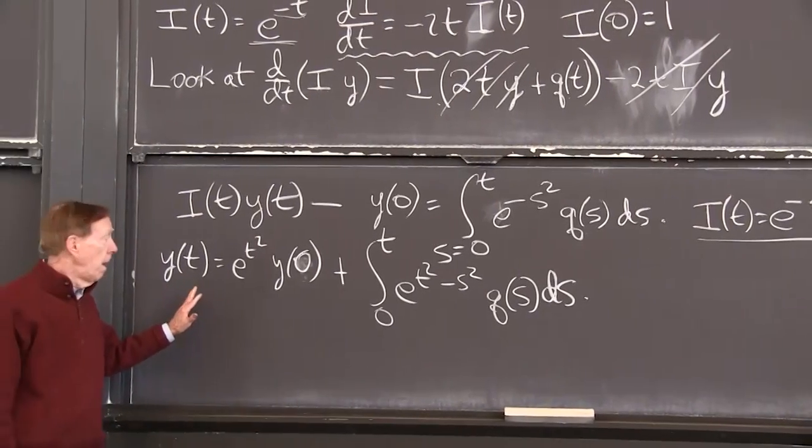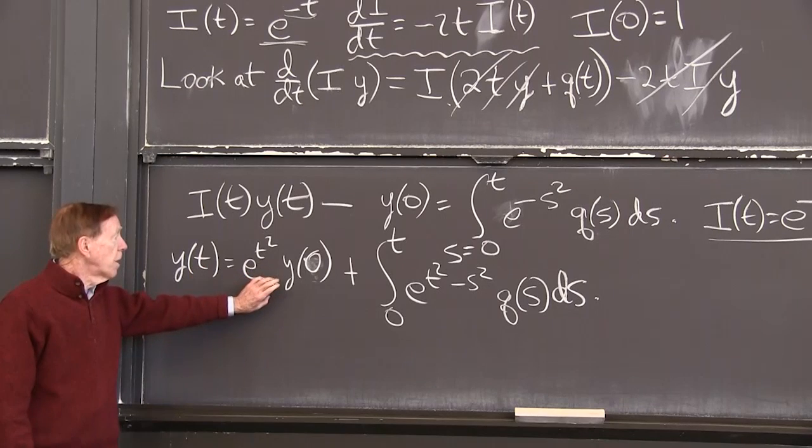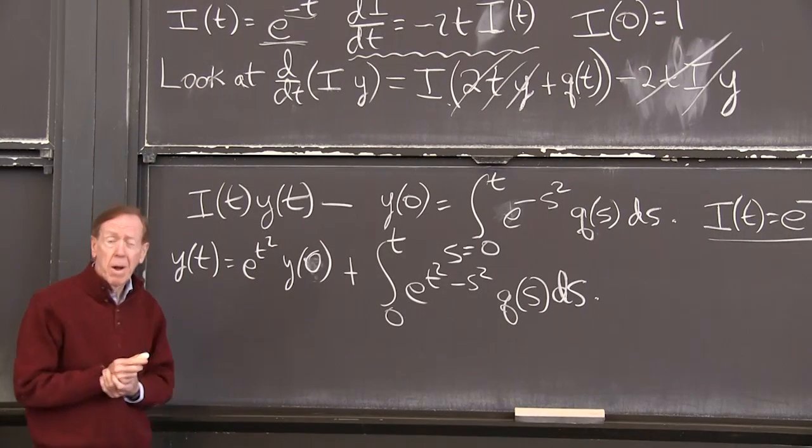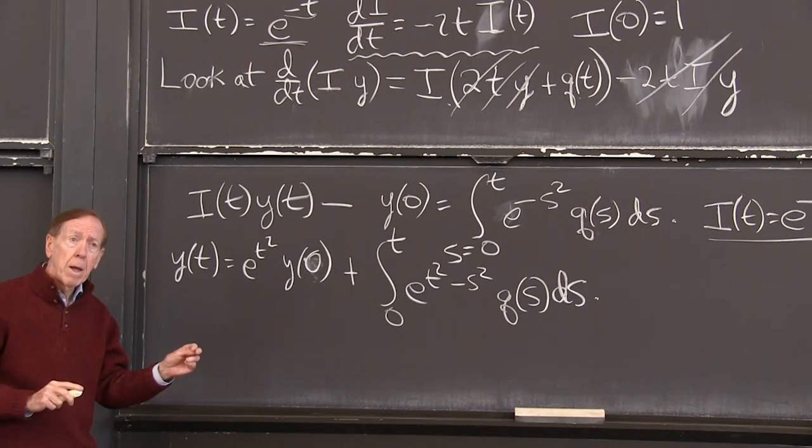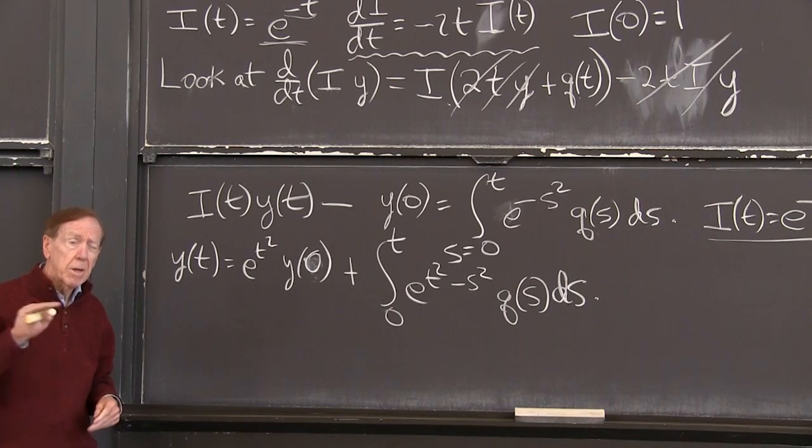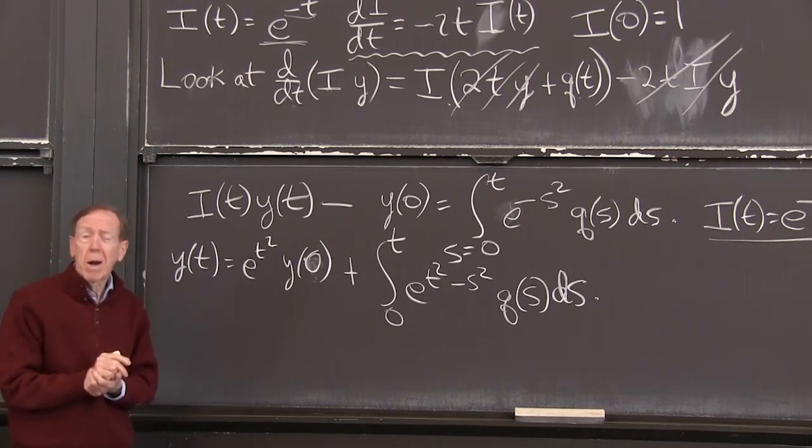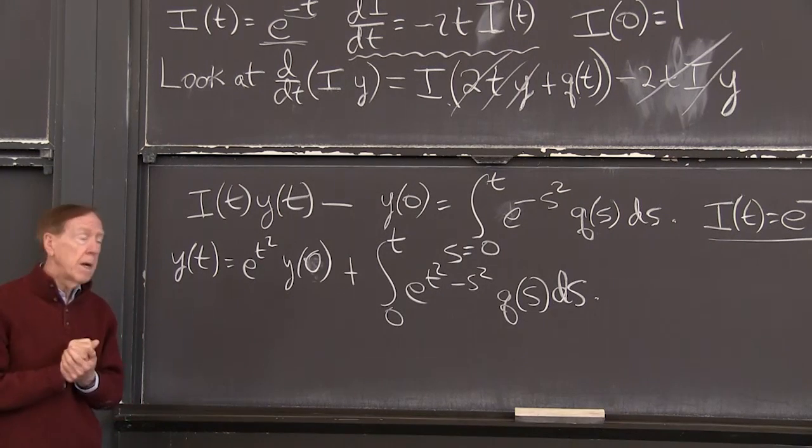Let's look at it. I have y of t. This is what comes out of y of 0. You see that the growth factor has changed from our old e to the at. That was the growth at constant rate, interest rate a, to e to the t squared. That's our growth from an increasing interest rate.